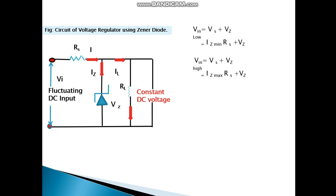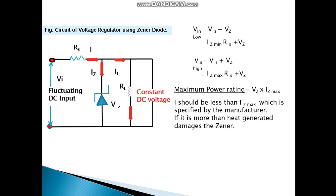The equation involved here: V in low is Vs plus Vz, that is IZ minimum RS plus Vz. V in high is Vs plus Vz, IZ max RS plus Vz. The maximum power rating is Vz into IZ max. I should be less than IZ max which is specified by the manufacturer. If it is more, then heat is generated which damages the Zener.